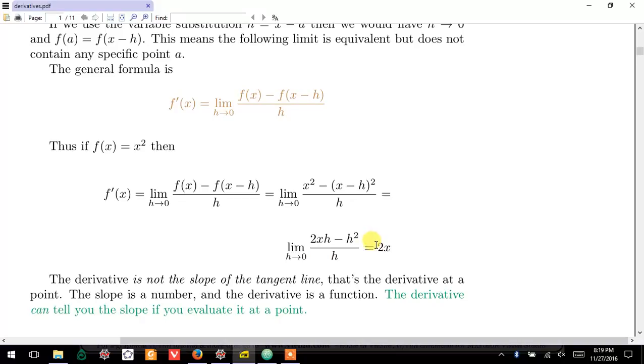And the end result is 2x. So notice that this is, in fact, a function. This is not a number. It cannot be the slope of a tangent line or anything like that. So this is the derivative. It is a function.